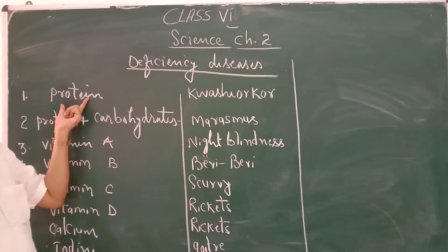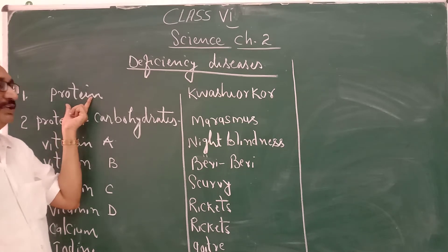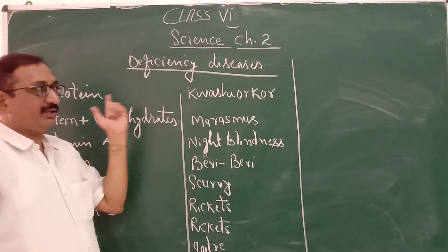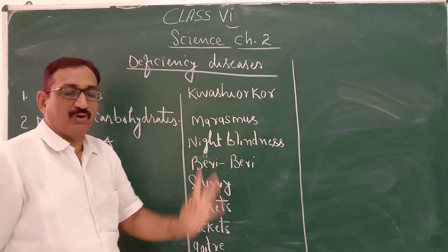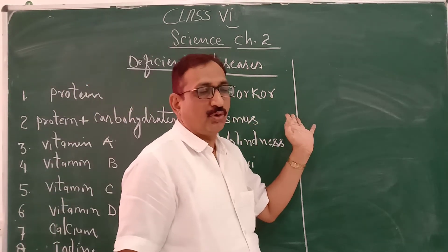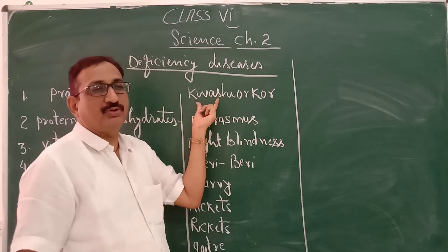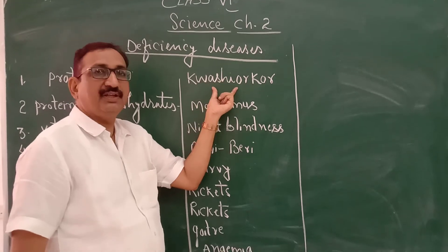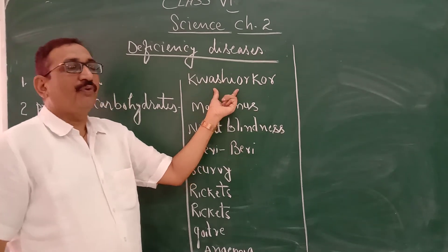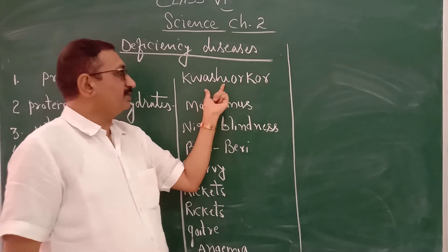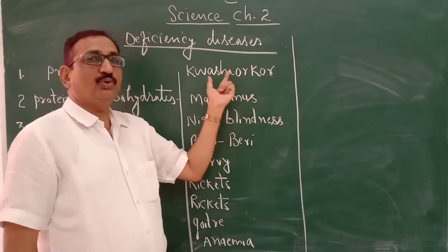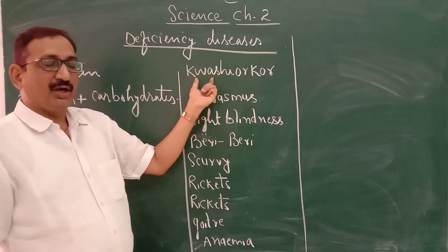First I have taken here protein. I have discussed the deficiency of protein causing a disease that is Kwashiorkor. I have told the symptoms of Kwashiorkor. This disease occurs especially in the age group of 1 to 5 years — only for children aged 1 to 5 years, due to lack of protein.